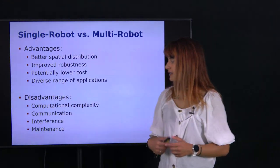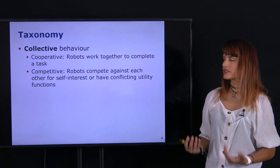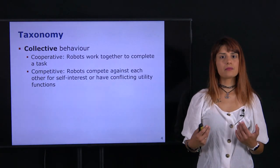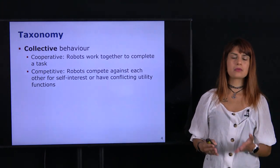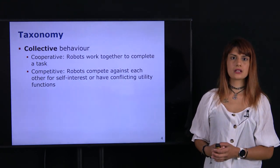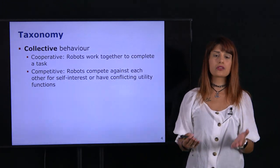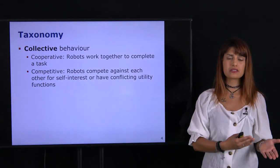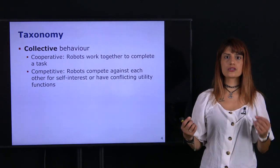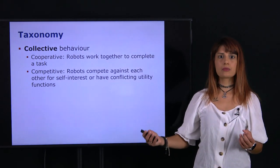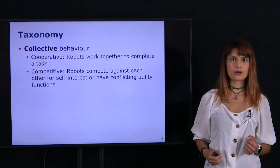On the next slides we're going to look at different types of multi-robot problems and classify them by developing a taxonomy. We want to think about which types of problems exist and what we want the robots to do, and then later in this lecture we'll use this knowledge to develop approaches for solving multi-robot planning and decision-making problems.